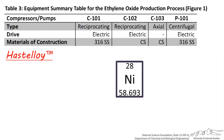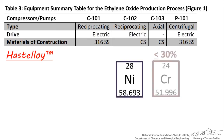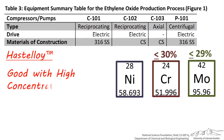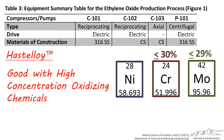Hastelloy is mostly nickel, with up to 30% chromium and up to 29% molybdenum, along with tungsten, iron, cobalt, and other elements. Hastelloy is good to use with high-concentration oxidizing chemicals, such as peroxides, nitric acid, and sulfuric acid.